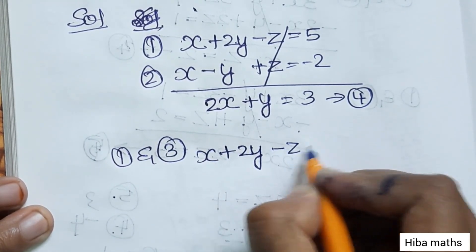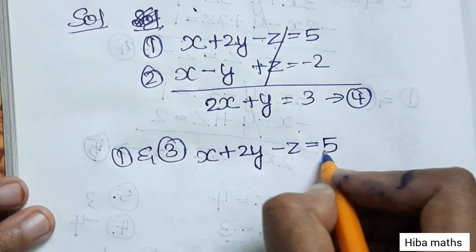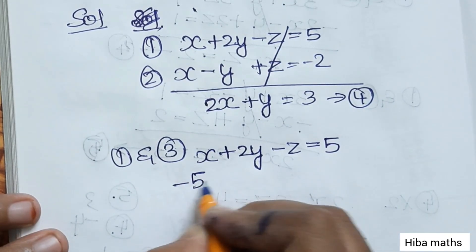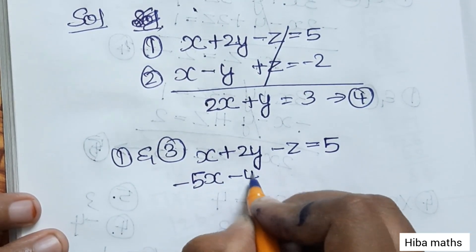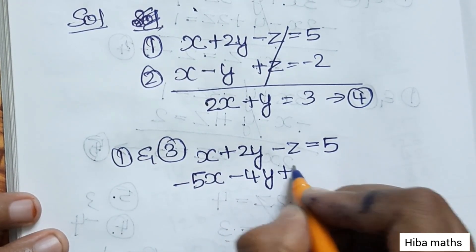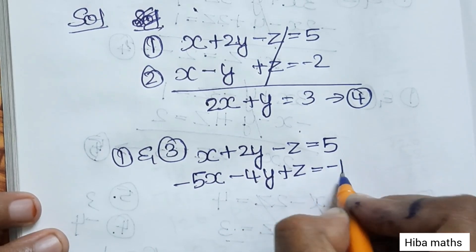The third equation is minus 5x minus 4y plus z equals minus 11.